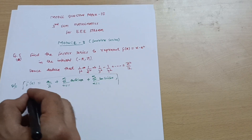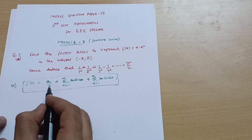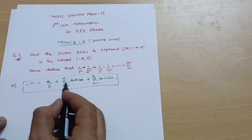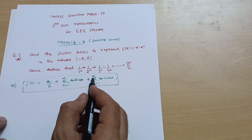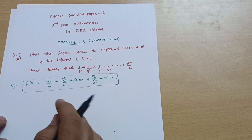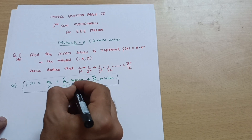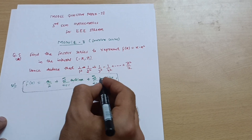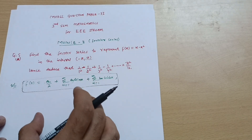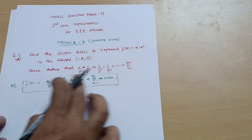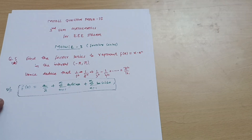For every question on the interval −π to π, the Fourier series is given by a₀/2 plus summation of aₙ cos(nx) plus summation of bₙ sin(nx). You have to calculate the Fourier coefficients a₀, aₙ, and bₙ, then substitute those values into the Fourier series to get the required series.